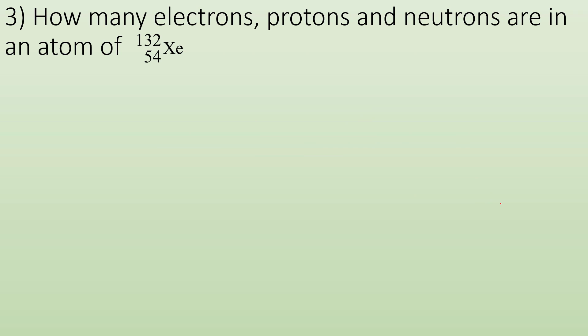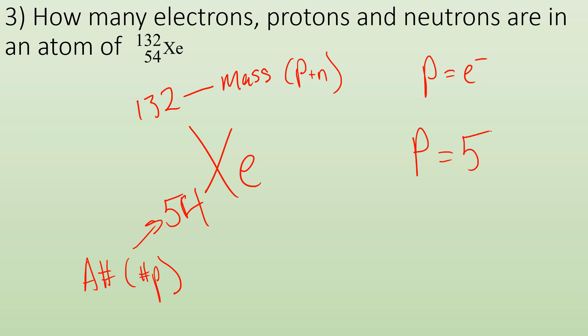How many electrons, protons, and neutrons are in an atom of xenon with that notation? Let me rewrite it. We got xenon. This 132 is the mass number, which is protons and neutrons. This number down here, the 54, is the atomic number, which is the number of protons. This thing is neutral, so I know that protons equals electrons because it's got no charge. So protons is going to be 54. Because it's neutral, we must have 54 electrons as well. But to get the neutrons, we know that the mass equals protons and neutrons. So neutrons must equal the mass minus the number of protons, which is going to equal 132 minus 54, which gives us 78. So we have 78 neutrons, 54 electrons, and 54 protons.